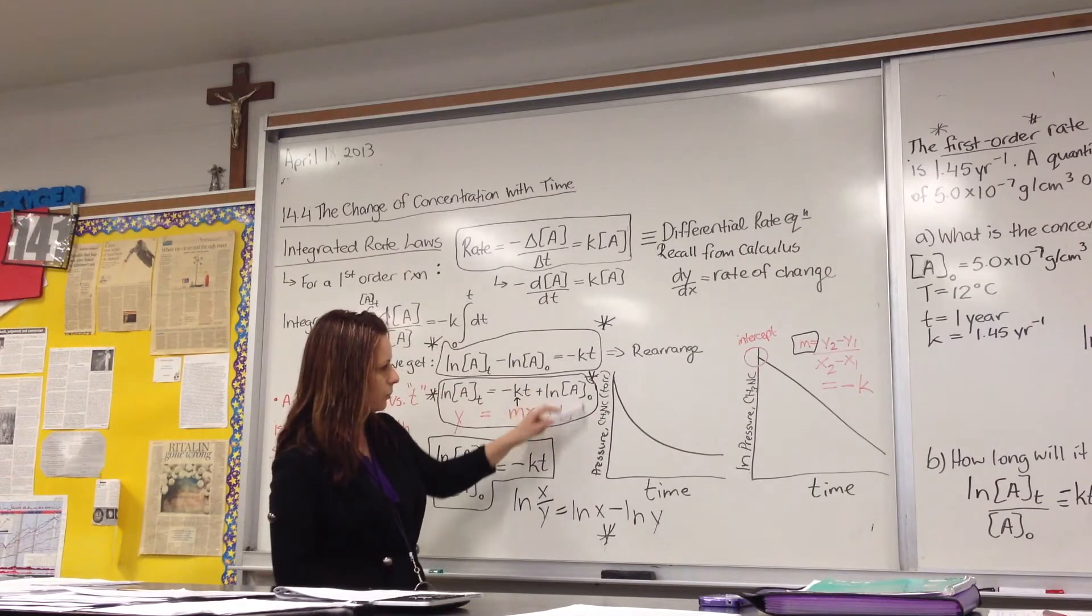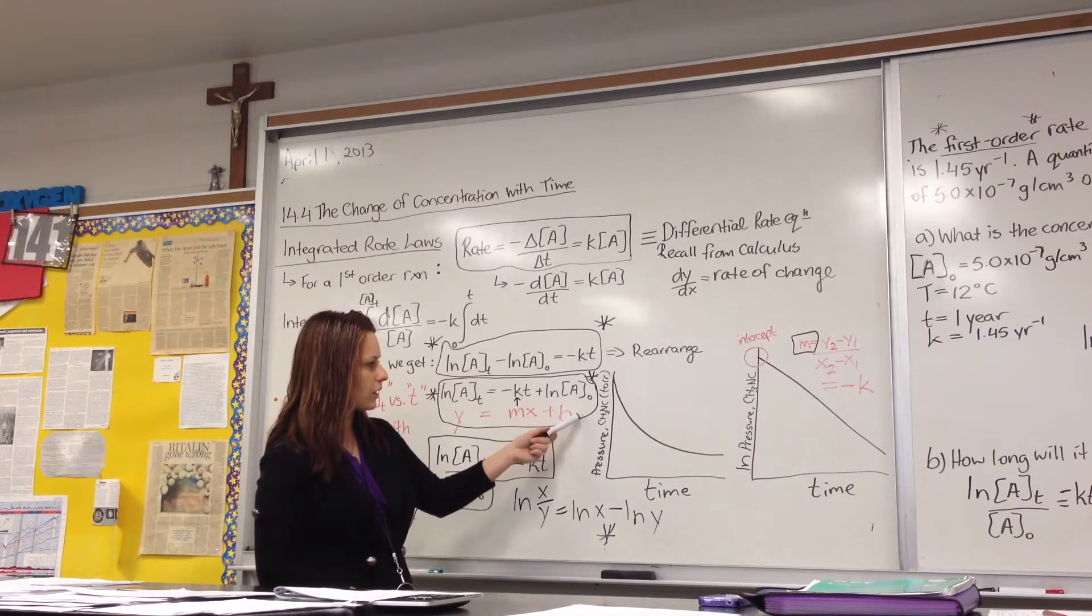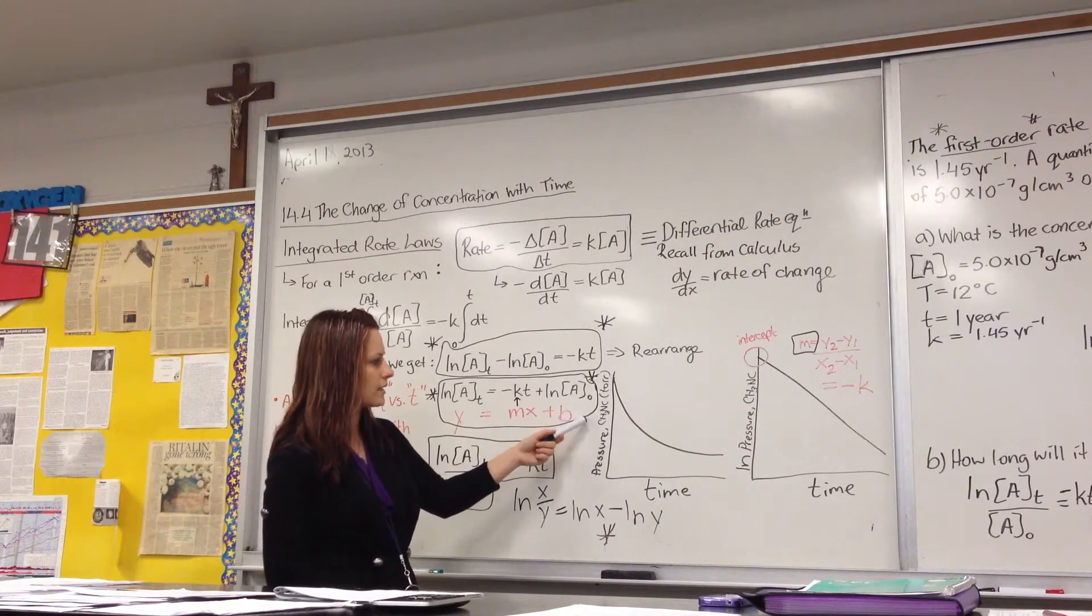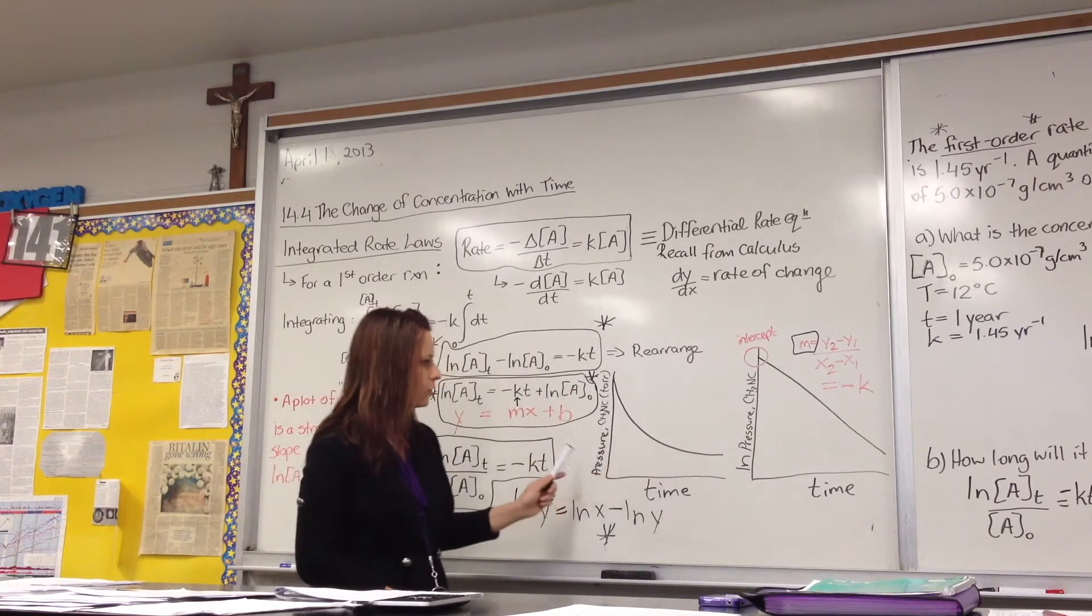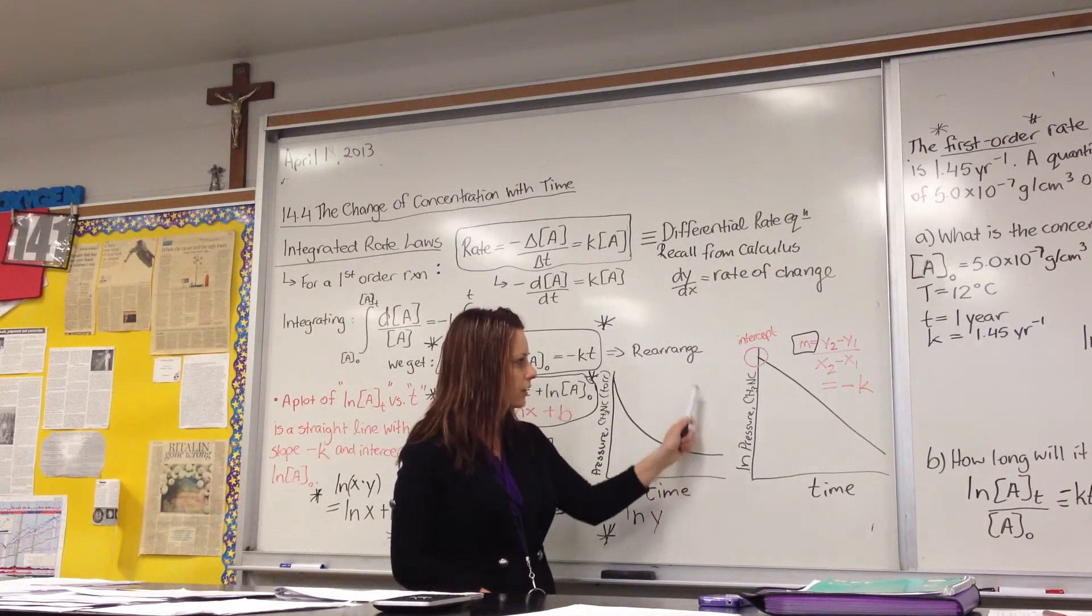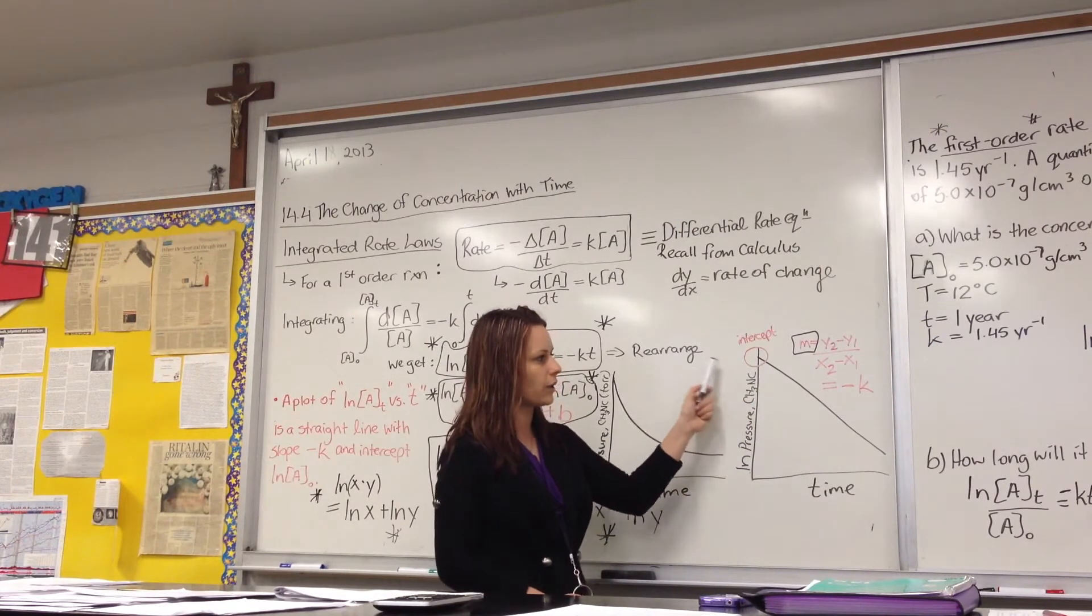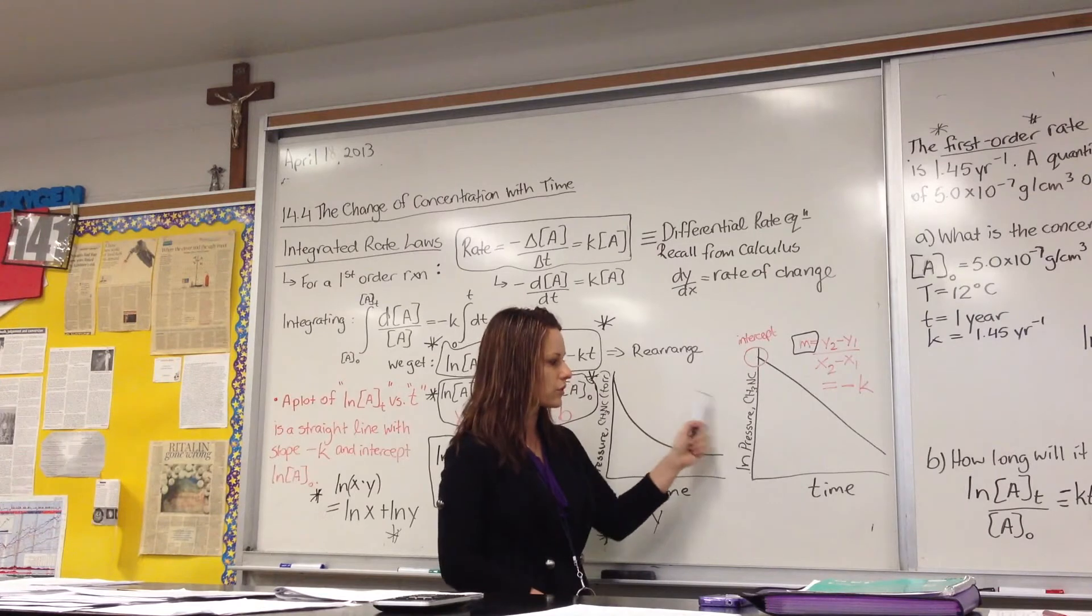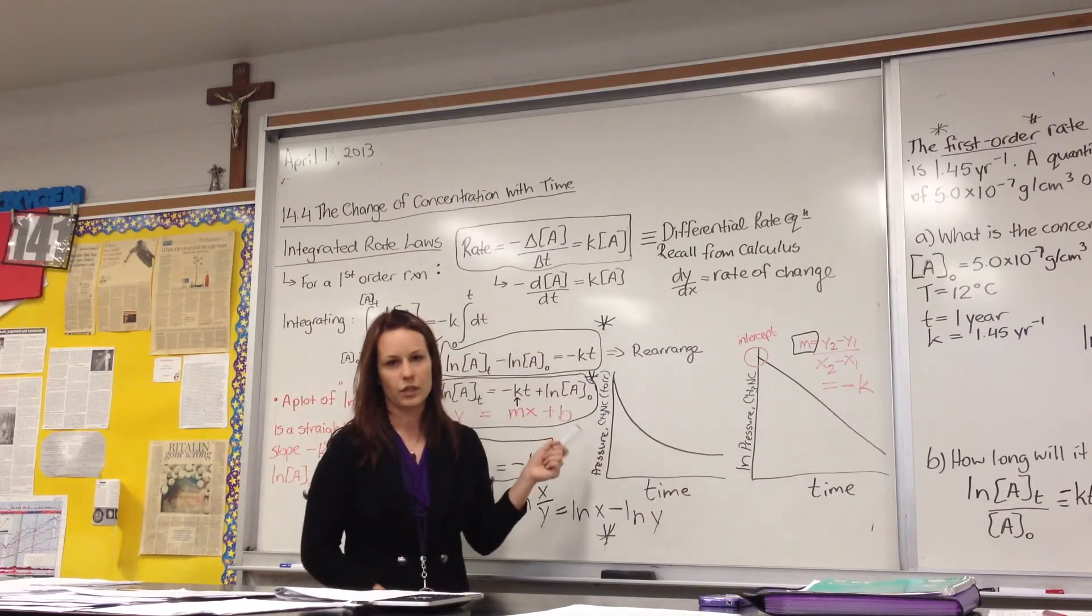So if we are to plot, for instance, the concentration of A, let's pretend that the concentration of A is CH3NC, and in this case you see that you end up getting a curve. Once we take the ln of this first order reaction, we get a straight line, and it's a lot easier to do the math and figure out everything that we need to figure out in order to solve problems if we're dealing with a straight line versus a curve.